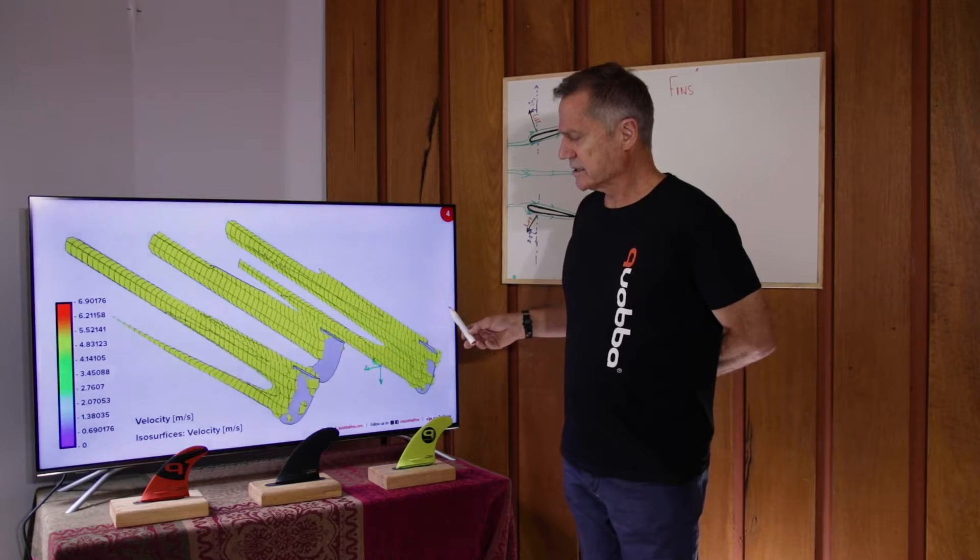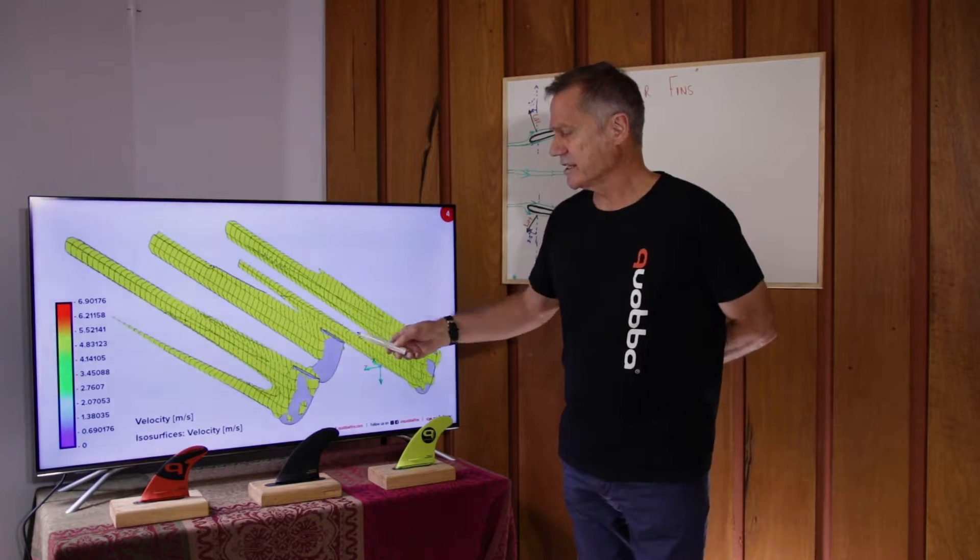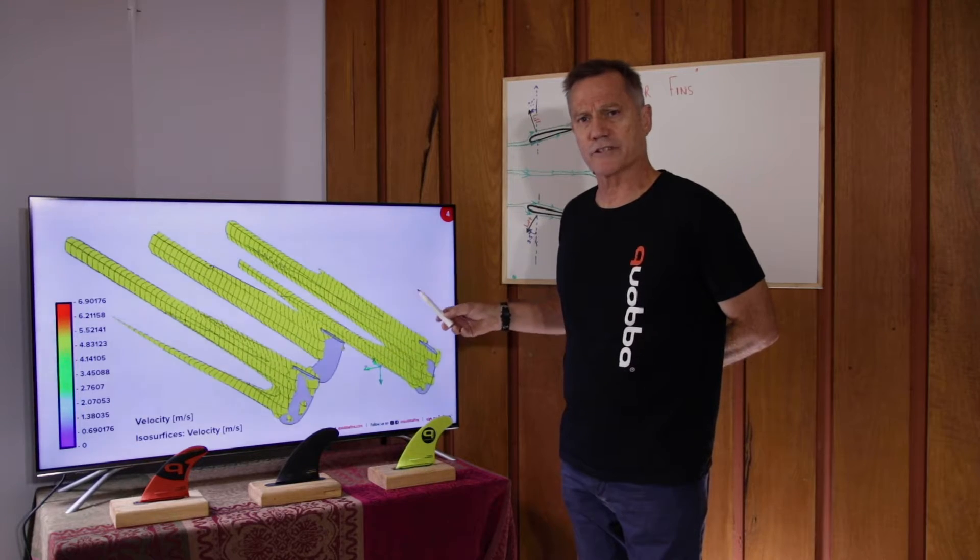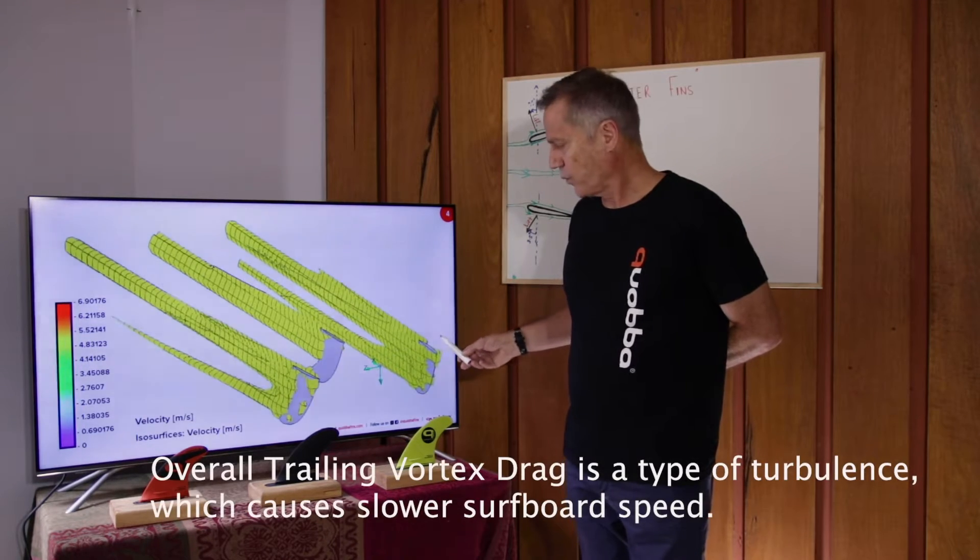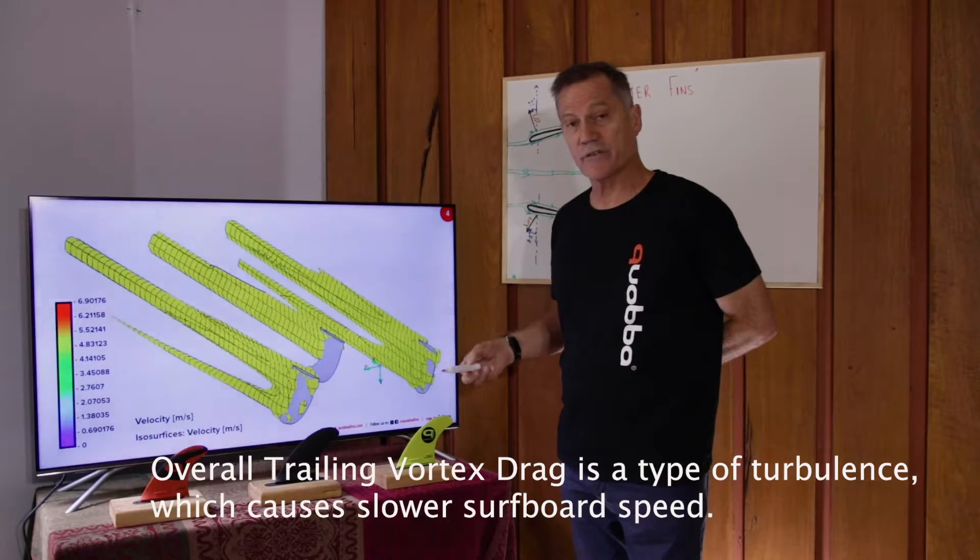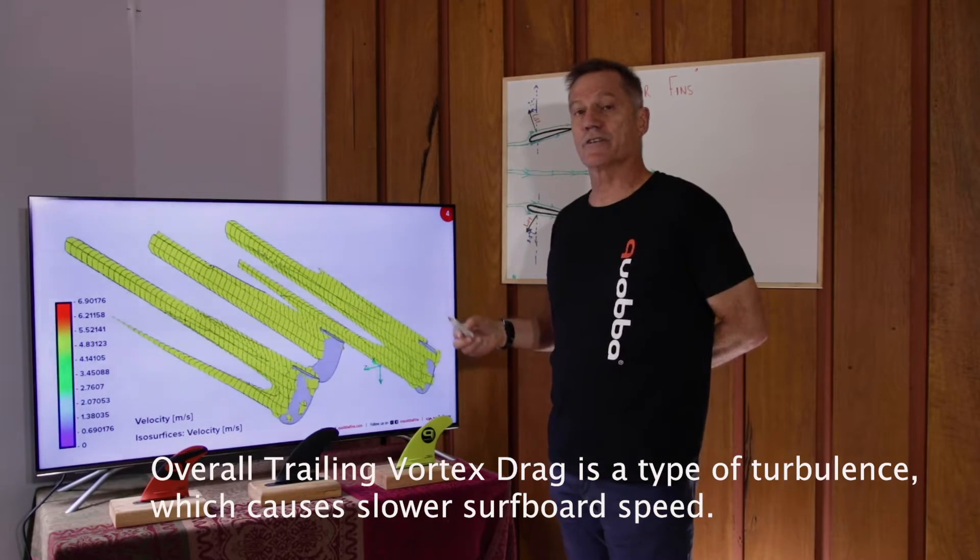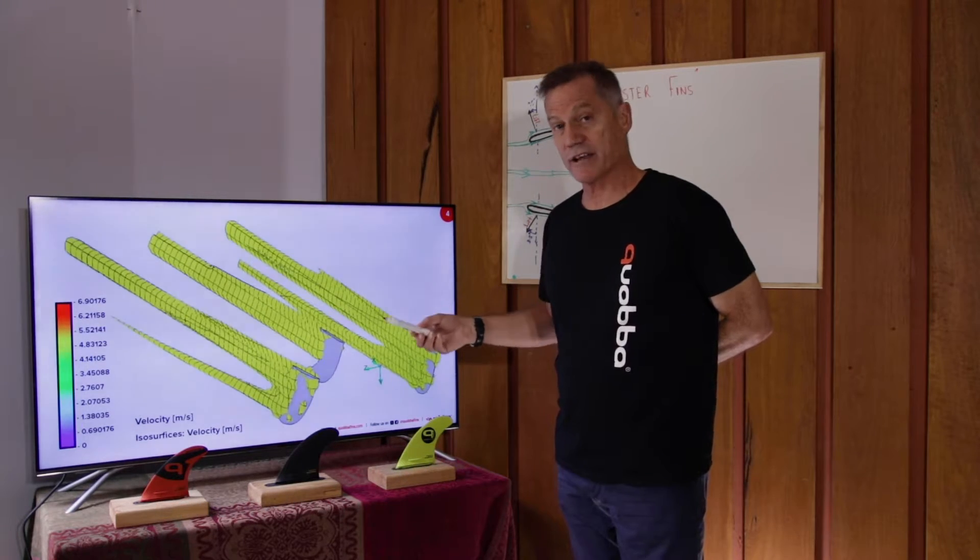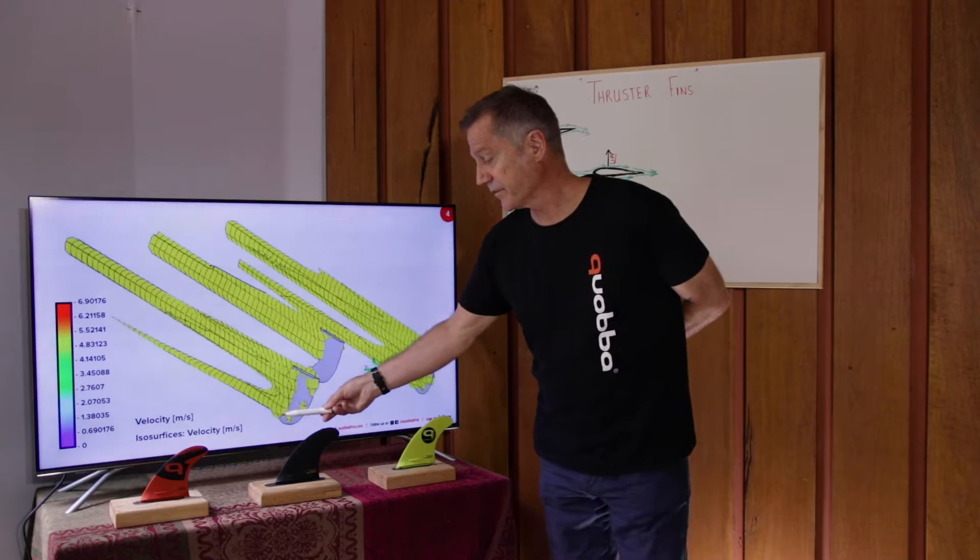And his figure 15 shows the overall trailing vortex drag on all three thruster fins. The surfing industry always believed that most of the drag, trailing vortex drag, was coming from the tip of each fin.